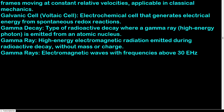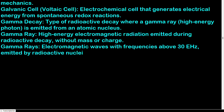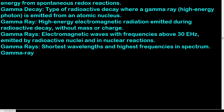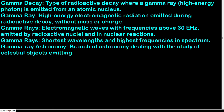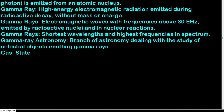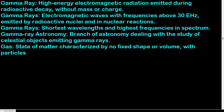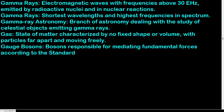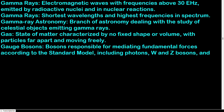Galilean transformation: equations converting coordinates between inertial frames moving at constant relative velocities, applicable in classical mechanics. Galvanic cell (voltaic cell): electrochemical cell that generates electrical energy from spontaneous redox reactions. Gamma decay: type of radioactive decay where a gamma ray (high-energy photon) is emitted from an atomic nucleus. Gamma rays: high-energy electromagnetic radiation with the shortest wavelengths and highest frequencies in the spectrum, emitted by radioactive nuclei and in nuclear reactions. Gamma-ray astronomy: branch of astronomy dealing with celestial objects emitting gamma rays.